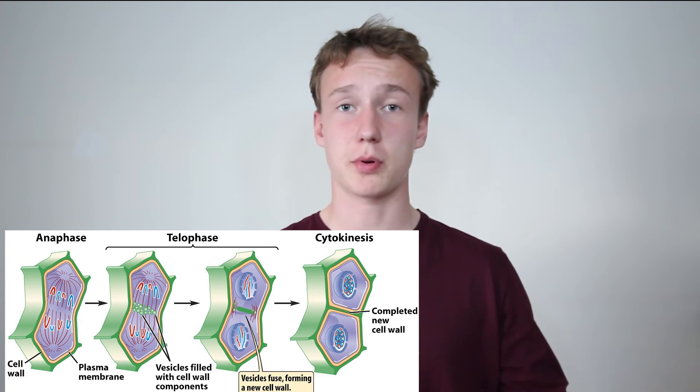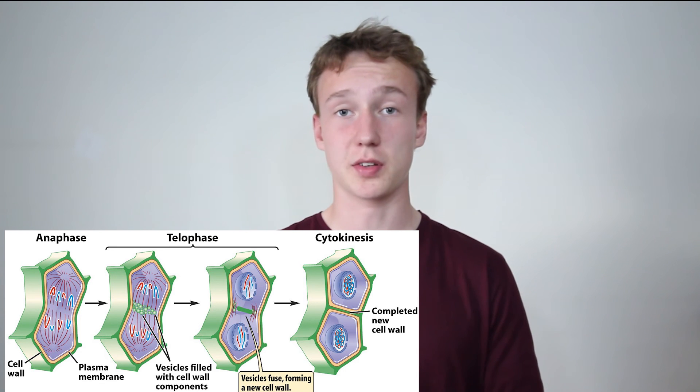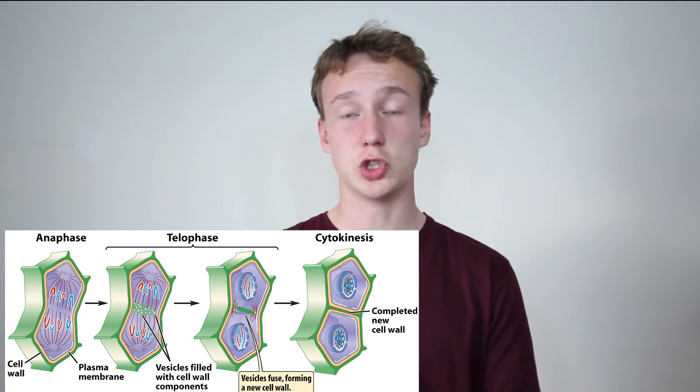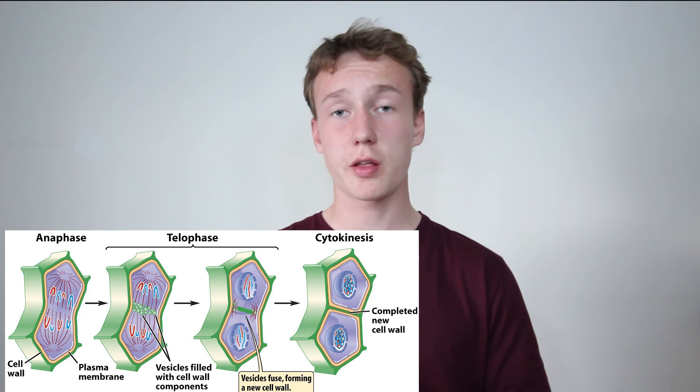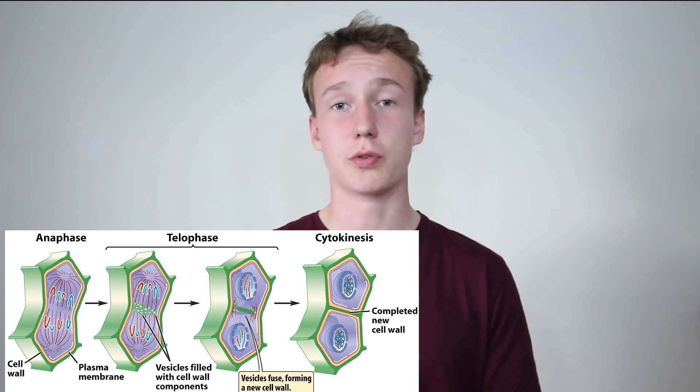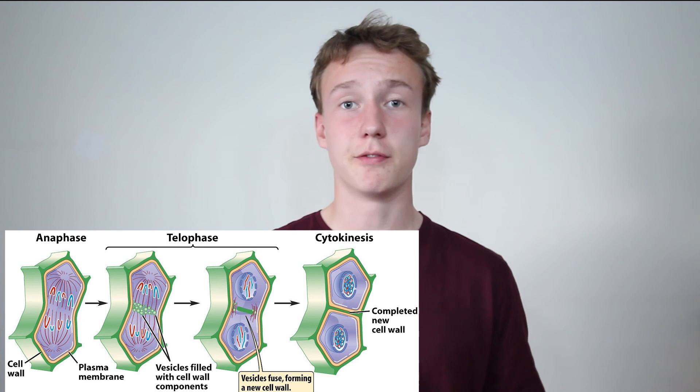In the plant cell, during telophase, vesicles from the Golgi apparatus start moving towards the middle of the cell. Those vesicles join and fuse with each other and with the already existing cell wall to form something called the cell plate, which divides the cytoplasm of the two halves of the cell. Following that, substances such as pectin, cellulose, and hemicellulose — which make up the cell wall — are secreted into that space in the cell plate to make the new cell wall.